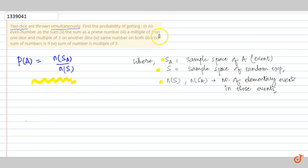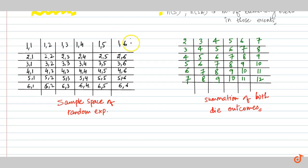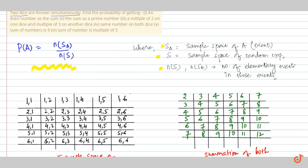We are going to first of all find out the sample space of the random experiment so that we can use it on all the given conditions. Here we have the sample space of our random experiment and here is the summation of both the dice outcomes, because the question asks about it continuously.